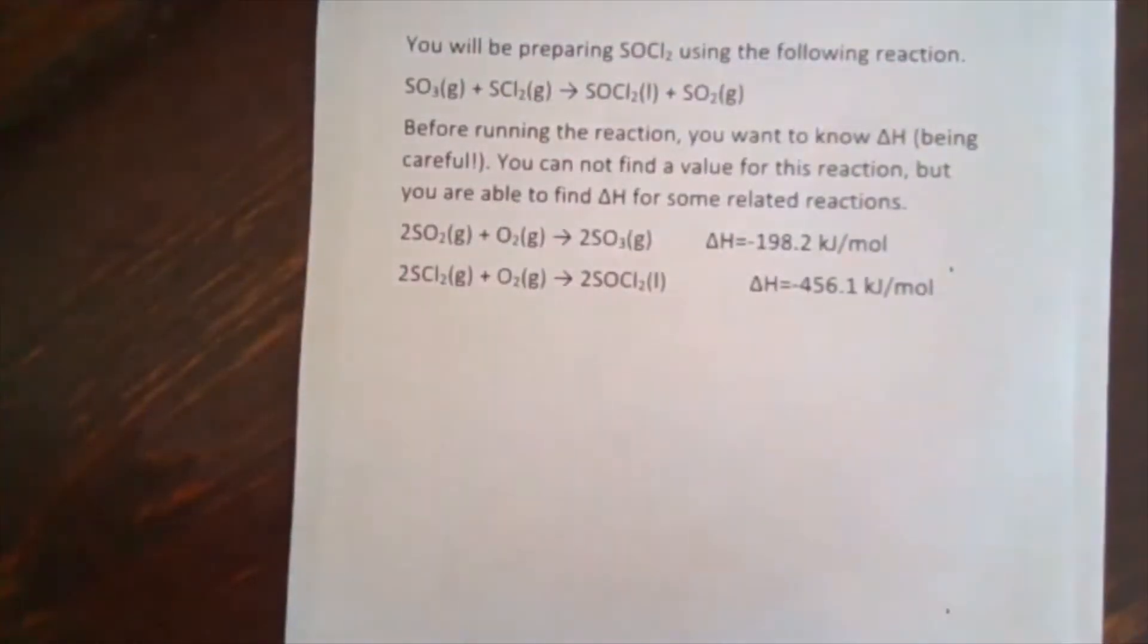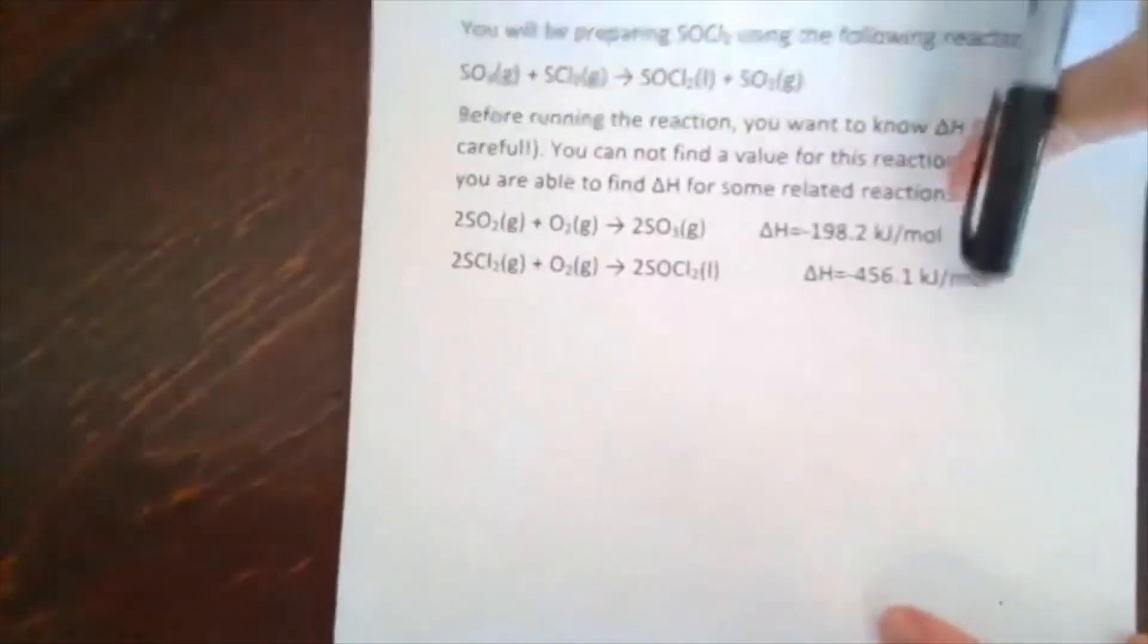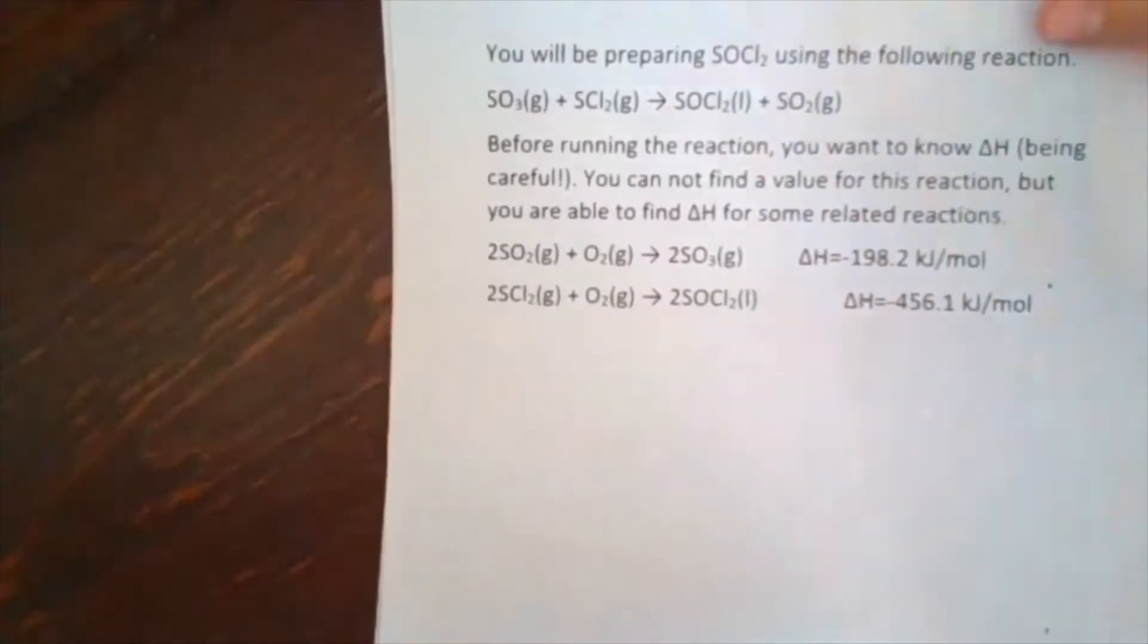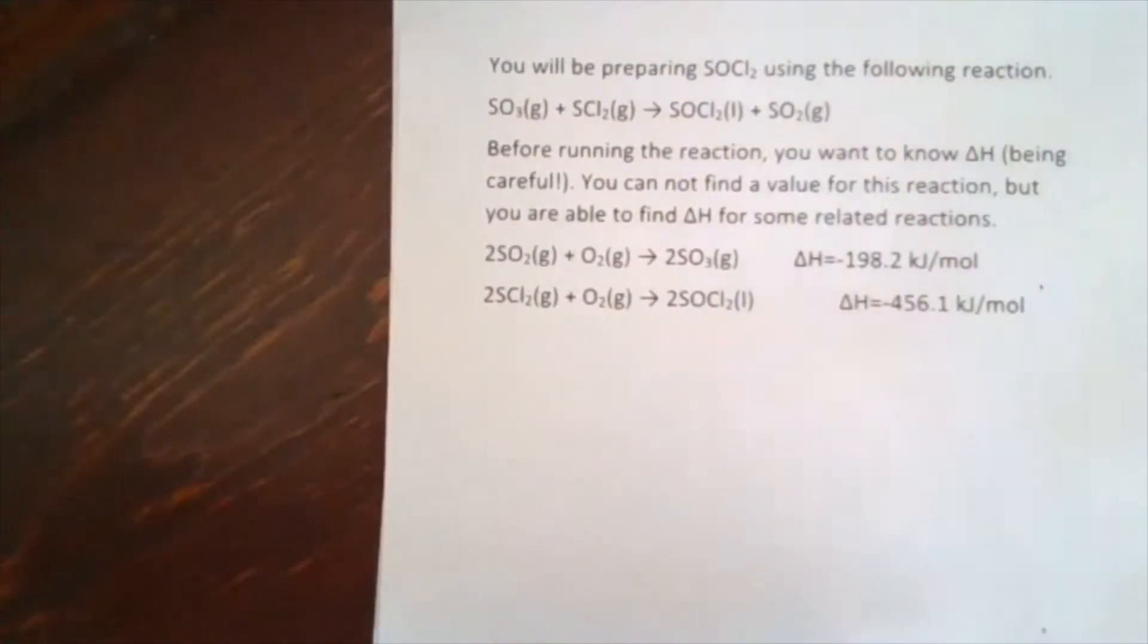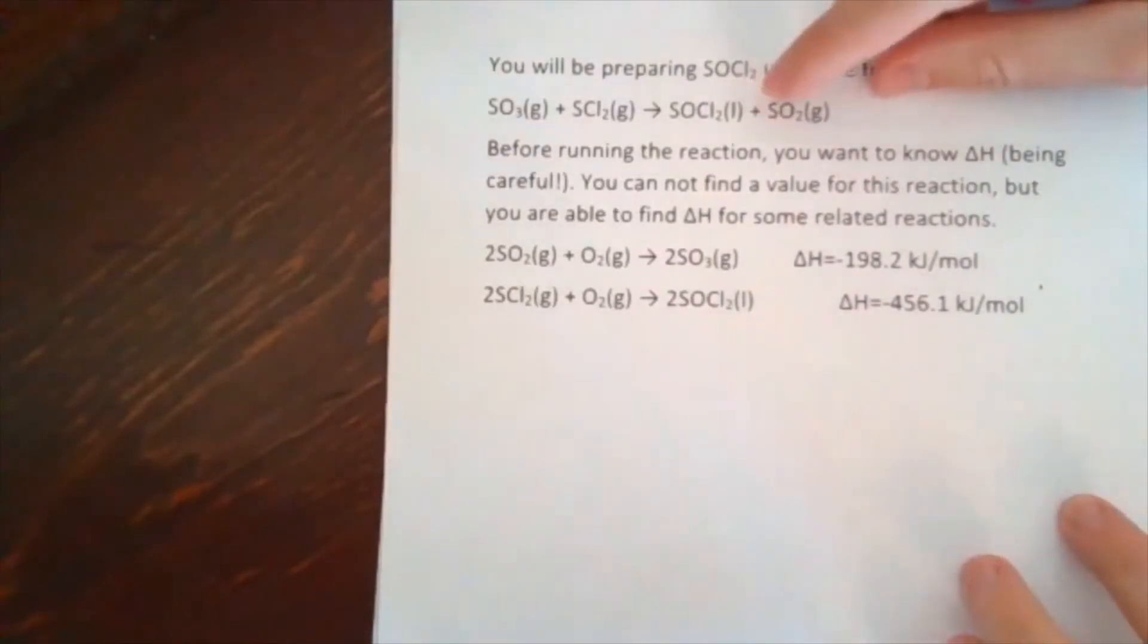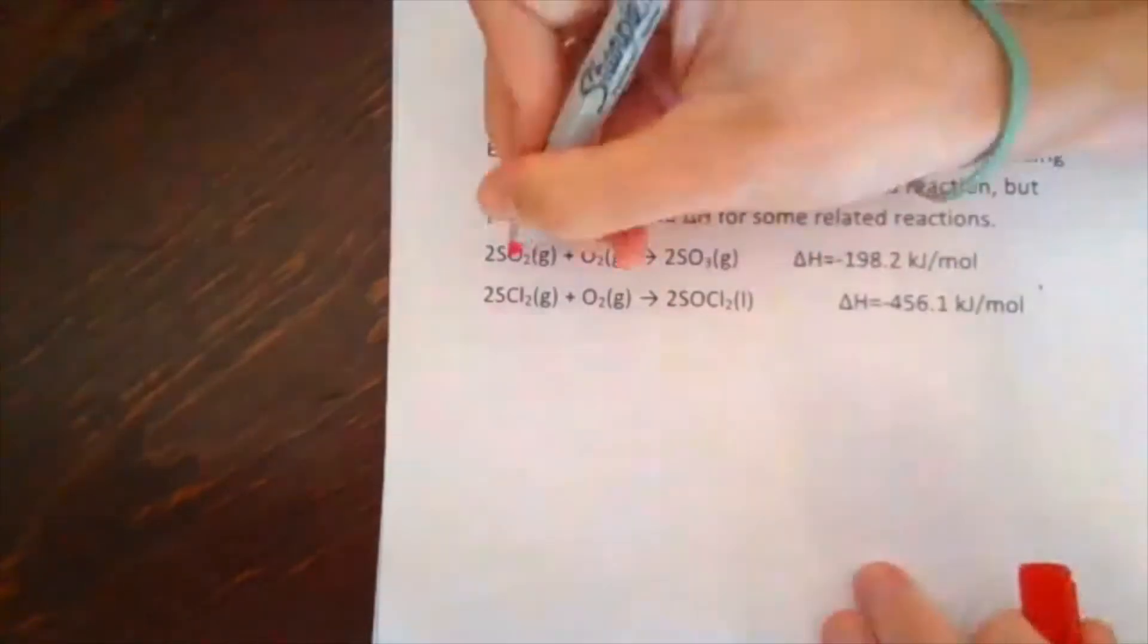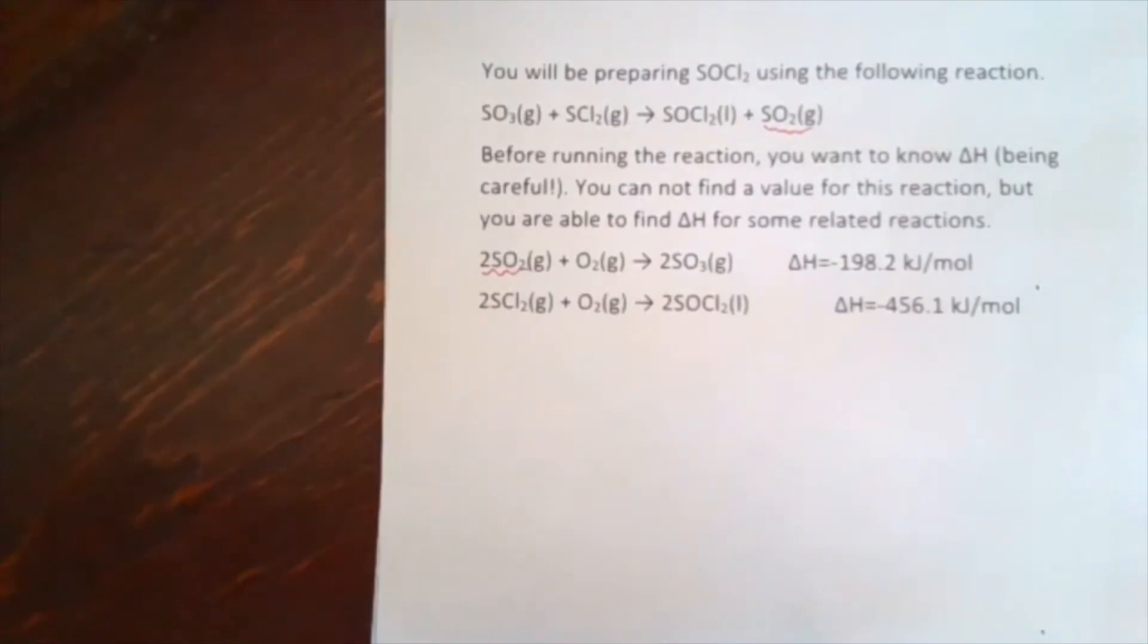So how we do that is we take a look at our reference reactions. We take a look at our target. And we think, when we were rearranging, changing the coefficients, changing the order. How are they similar and how are they different? What I really want to key in on is do I have anything that is only in one of the reference reactions? So, for example, SO2. So I can see SO2 is only in this one reference reaction and it only shows up on the product side.